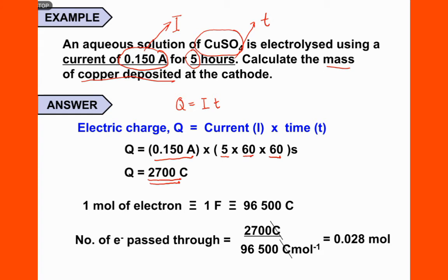We know that one mole of electrons equals one Faraday, which is 96,500 Coulombs. The number of moles of electrons passed through this electrolysis equals 2,700 Coulombs divided by 96,500 Coulombs per Faraday, giving us the mole number involved in the copper sulfate solution.